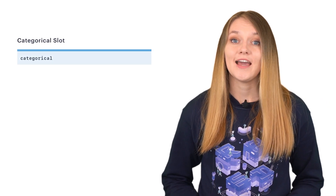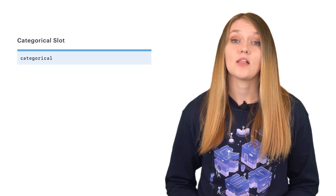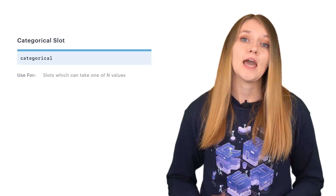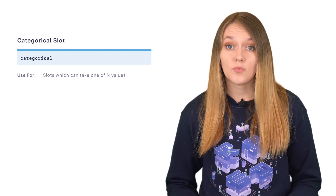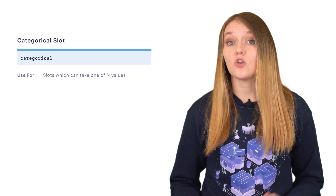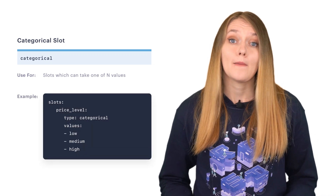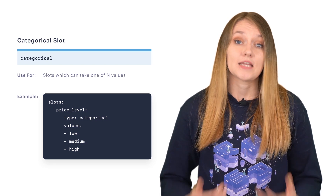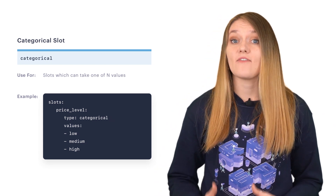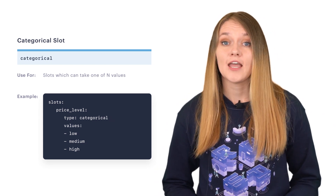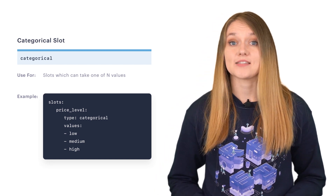Categorical slots are useful when a piece of information can take one of N possible values — for example, low, medium, or high. Here both the presence and the actual value of the slot matter. The dialogue manager model will check what the value of the slot is and take it into account when making predictions for the next action.